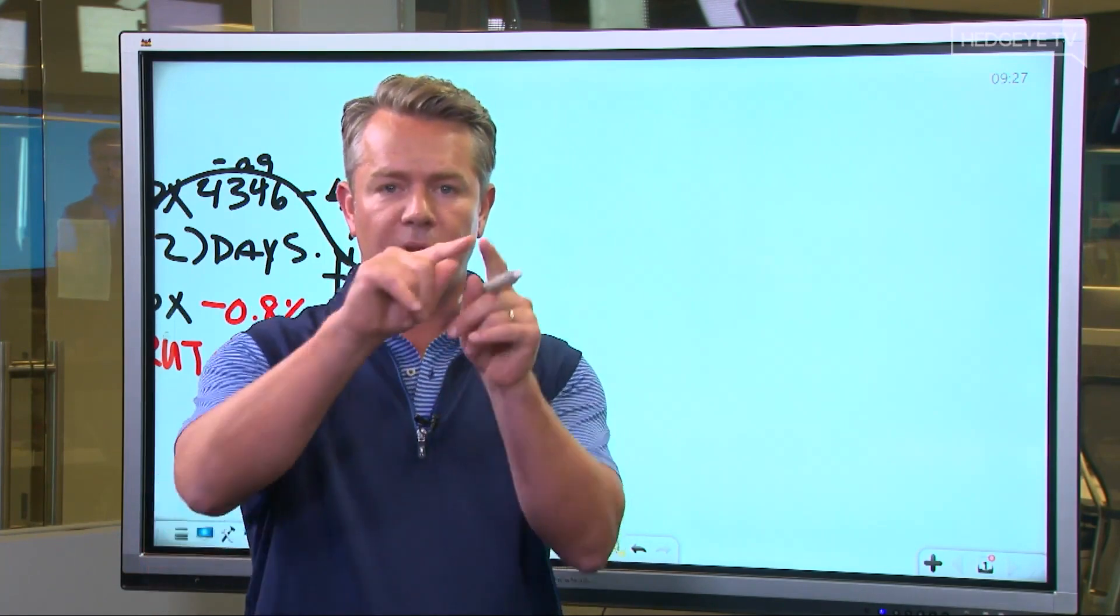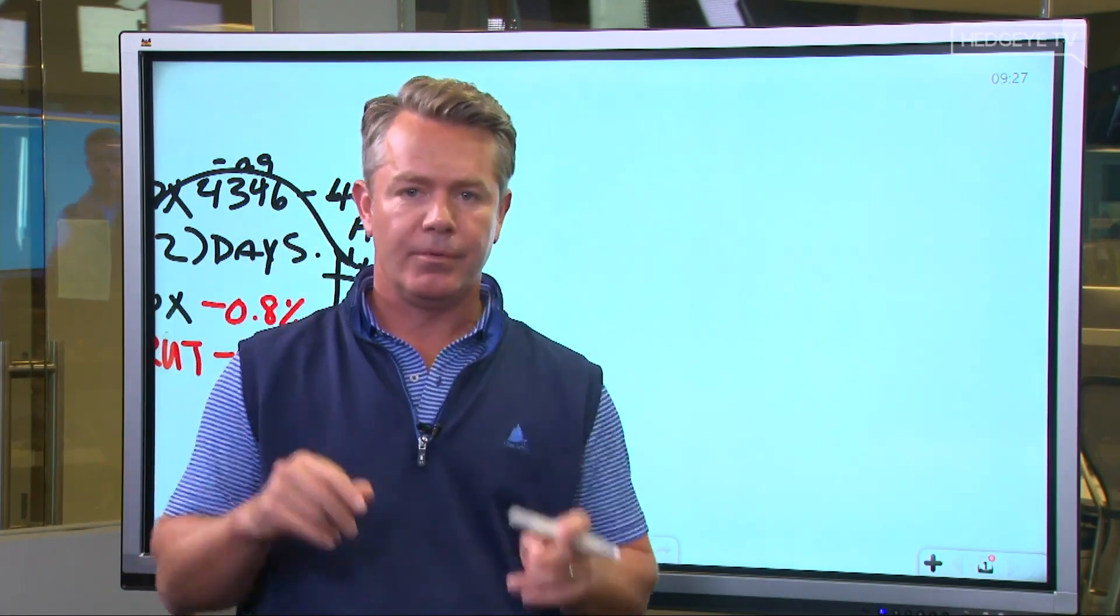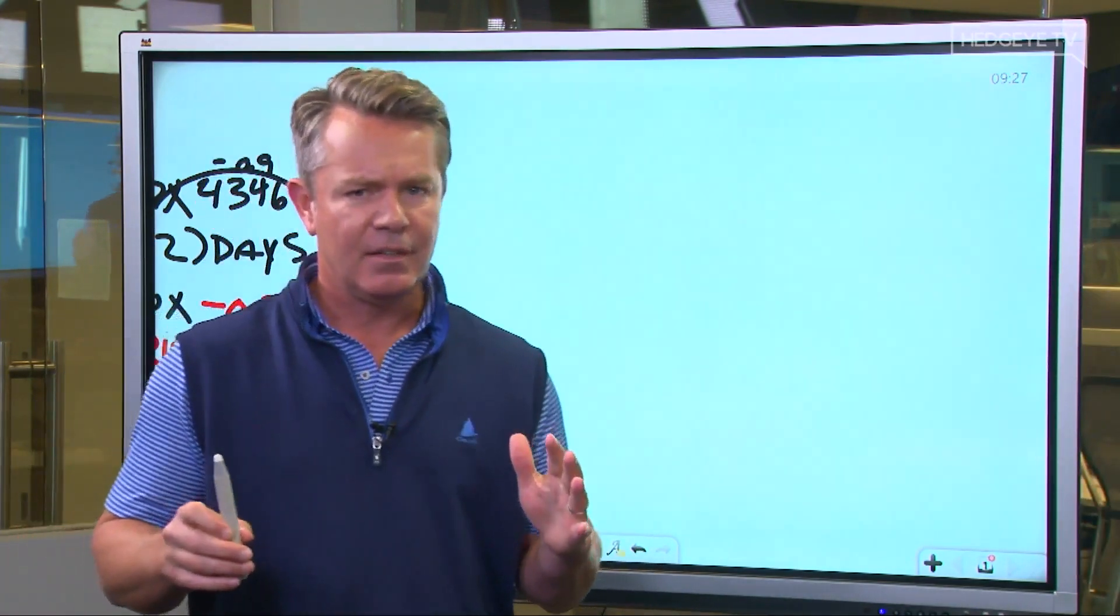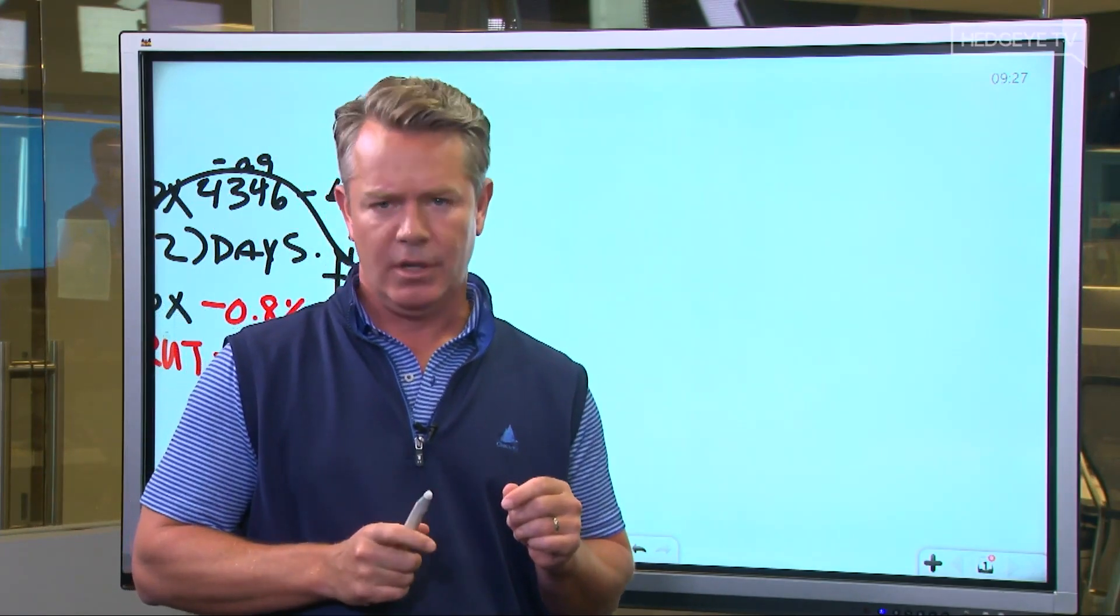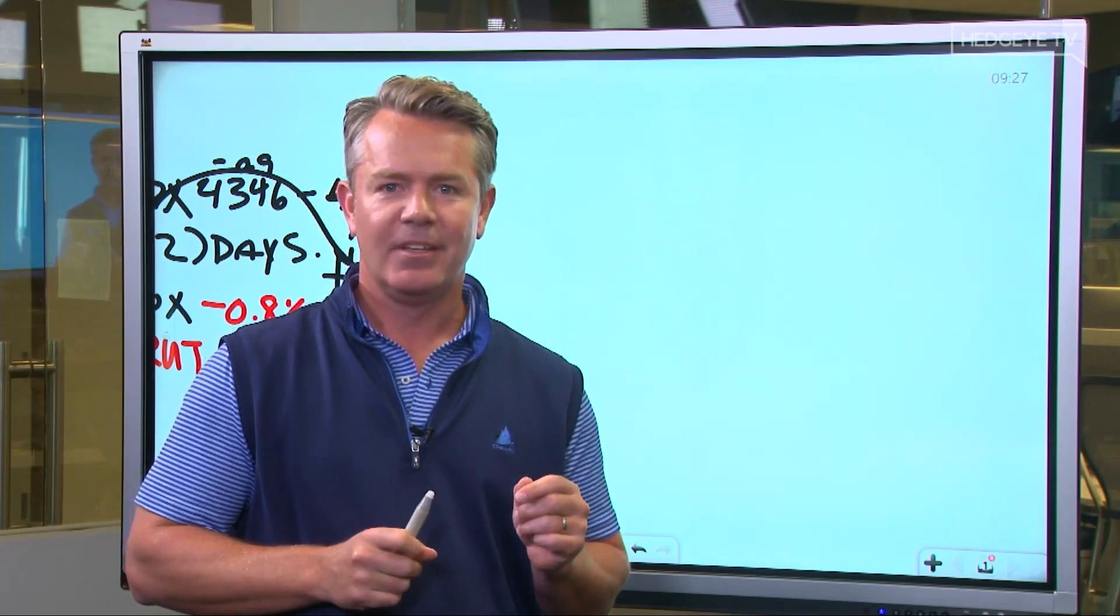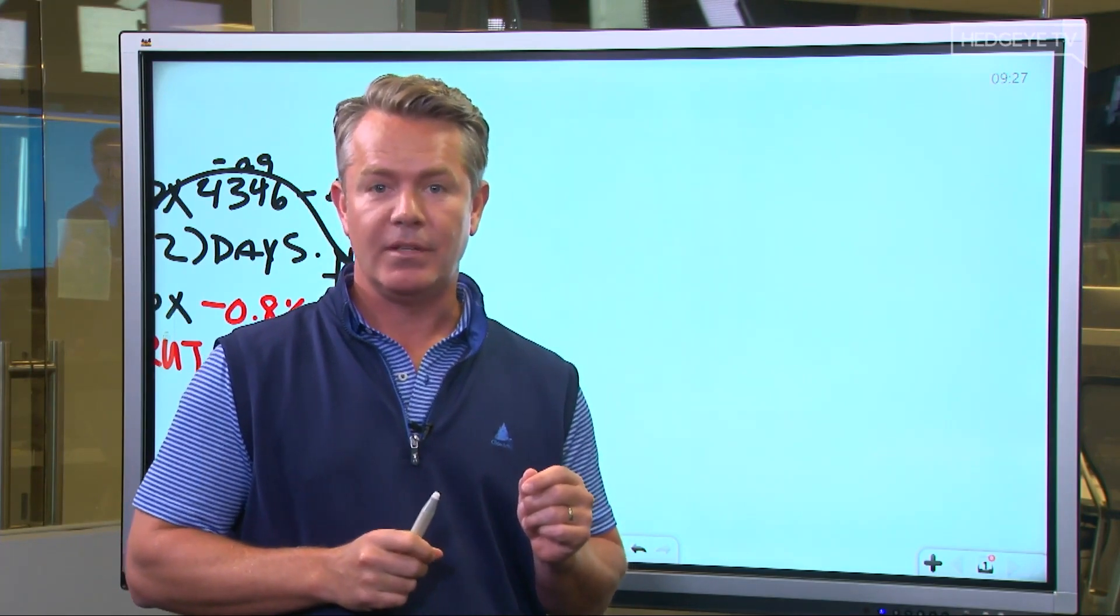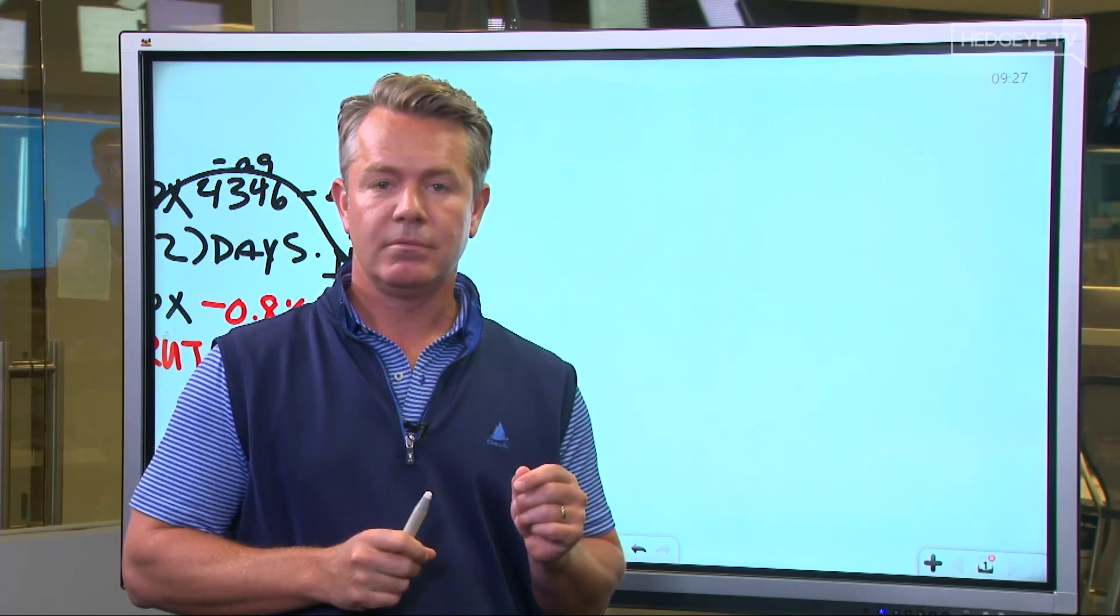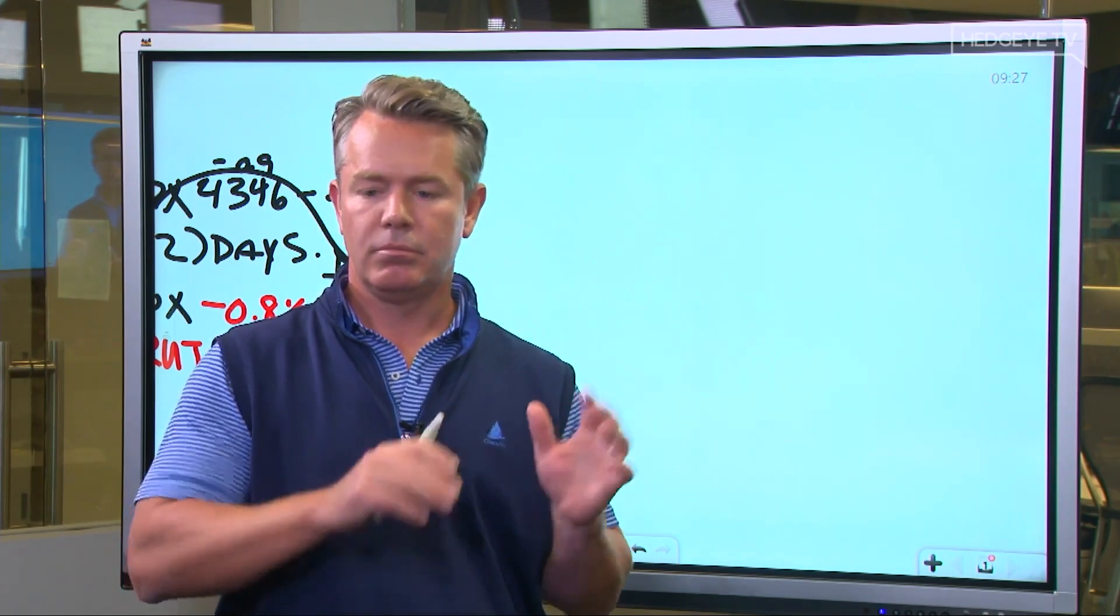When you're in quad three, the rate of change of growth is going down, not up. Right. Stagflation is nasty. Go back to 1971. Pull up a twos, tens chart. 1971. Oh, looks just like today. Then by my birthday, January 5th, 1975. Just terrible.